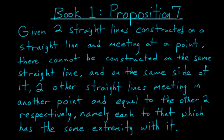Book 1, Proposition 7 of Euclid's Elements basically focuses on the modern-day side-side-side theorem. Given two straight lines constructed on a straight line and meeting at a point, there cannot be constructed on the same straight line and on the same side of it two other straight lines meeting in another point and equal to the other two respectively, namely each to that which has the same extremity with it.